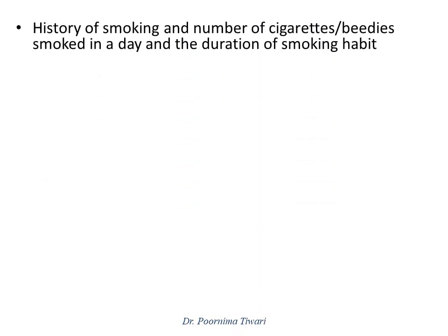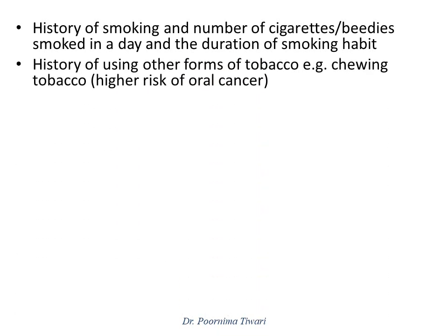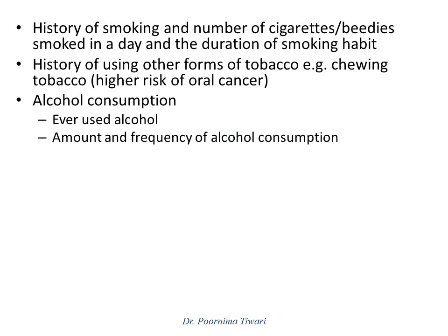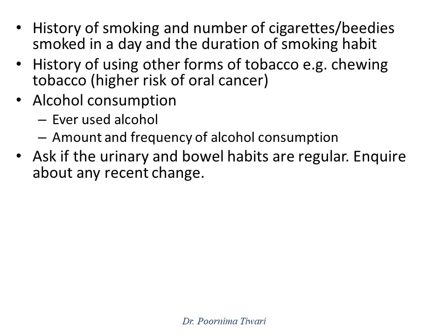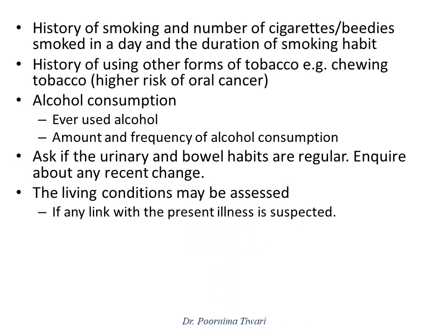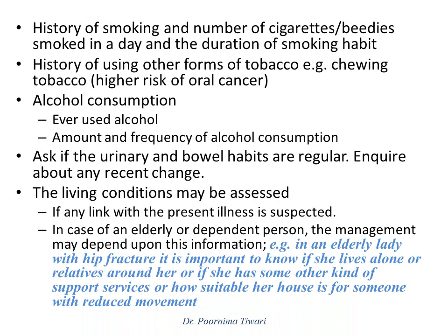Under personal history, ask about smoking — assess the number of cigarettes smoked per day and the duration of the smoking habit — and also ask about other forms of tobacco consumption. Ask about alcohol consumption and try to assess the amount and frequency; ask CAGE questions, and if the person is a heavy drinker, advise accordingly. Ask about urinary and bowel habits and any recent change in them. The living conditions may be assessed because the disease may be linked to them. In the case of an elderly or dependent person, this is important for management — for example, for an elderly lady with a hip fracture, it is important to know if she lives alone, has a caretaker, support services, or a suitable home environment.